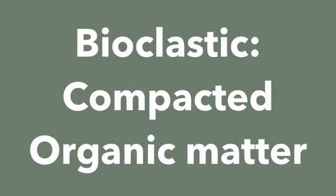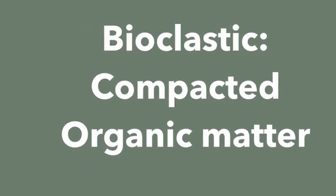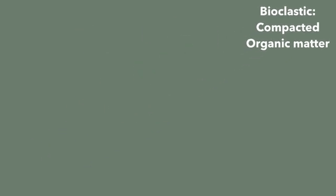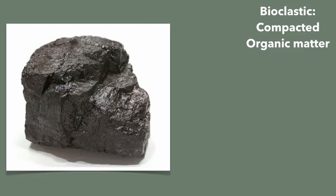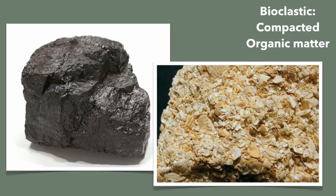Bioclastic rocks form from compacted organic material. Examples include coal, which forms from compacted plant remains, and coquina, a variety of limestone made of compacted shells. Shells are made by sea creatures, making them organic material, so coquina is classified as a bioclastic rock because it's organic matter that's been compacted together.